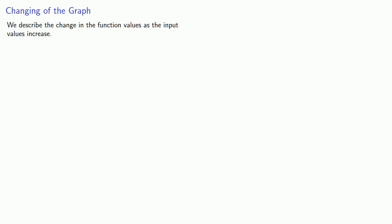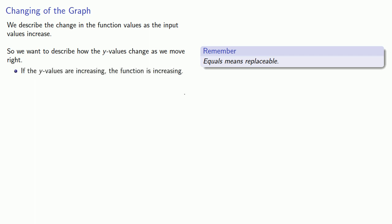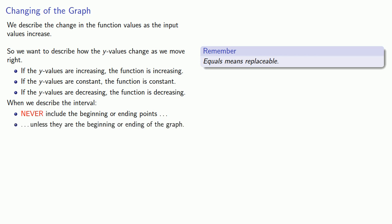Remember that we describe the change in the function values as the input values increase. If we're graphing y equals f of x, remember equals means replaceable, so our y values are the function values. We want to describe how the y values change as we move to the right. If the y values are increasing, the function is increasing. If the y values are constant, the function is constant. And if the y values are decreasing, the function is decreasing. Where there is a little surprise is when we describe the interval — never include the beginning or ending points unless they are the beginning or ending of the graph.